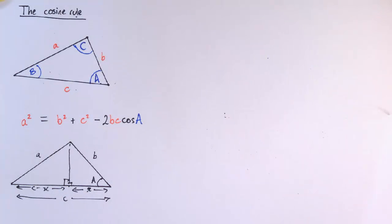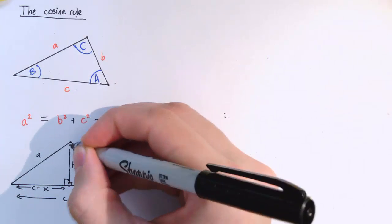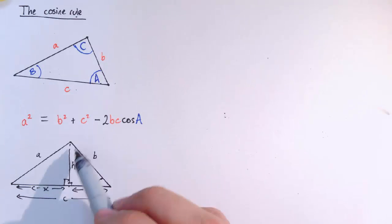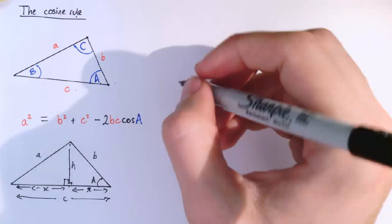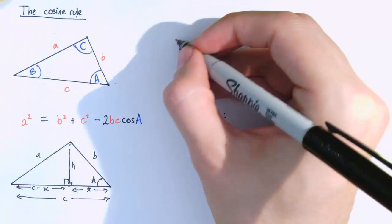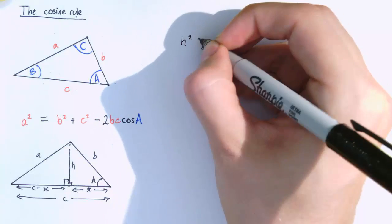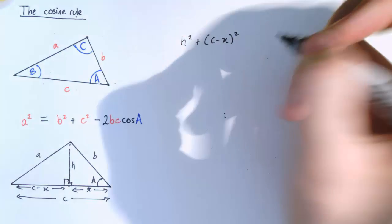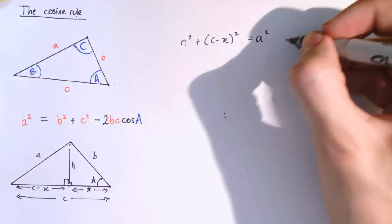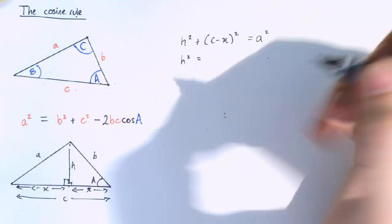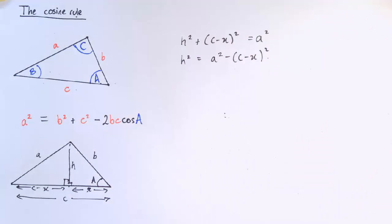And the reason that that's useful is because I can now look at this height, h, in two different ways. So I could see it as a part of this triangle on the left. And doing that would give us that by Pythagoras theorem, h squared plus (c minus x) squared equals a squared. Or I could write that as h squared equals a squared minus (c minus x) squared.